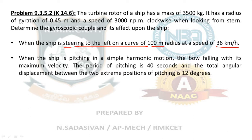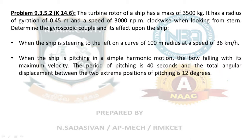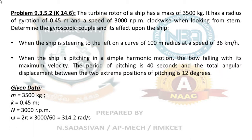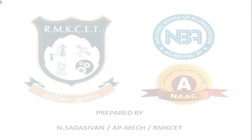Case two: when the ship is pitching in simple harmonic motion with the bow falling at maximum velocity. The period of pitching is 40 seconds, and the total angular displacement between the two extreme positions is 12 degrees — so phi equals 6 degrees, which is half of 12. Now listing the given data: mass, radius of gyration, speed 3000 rpm giving omega of 314.2 radians per second.